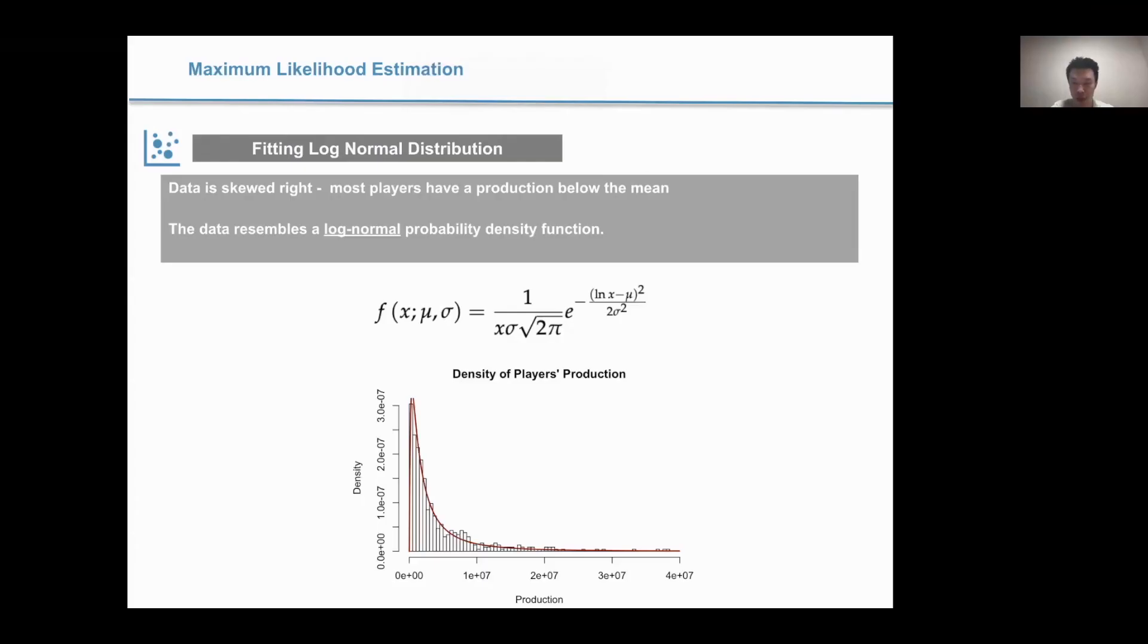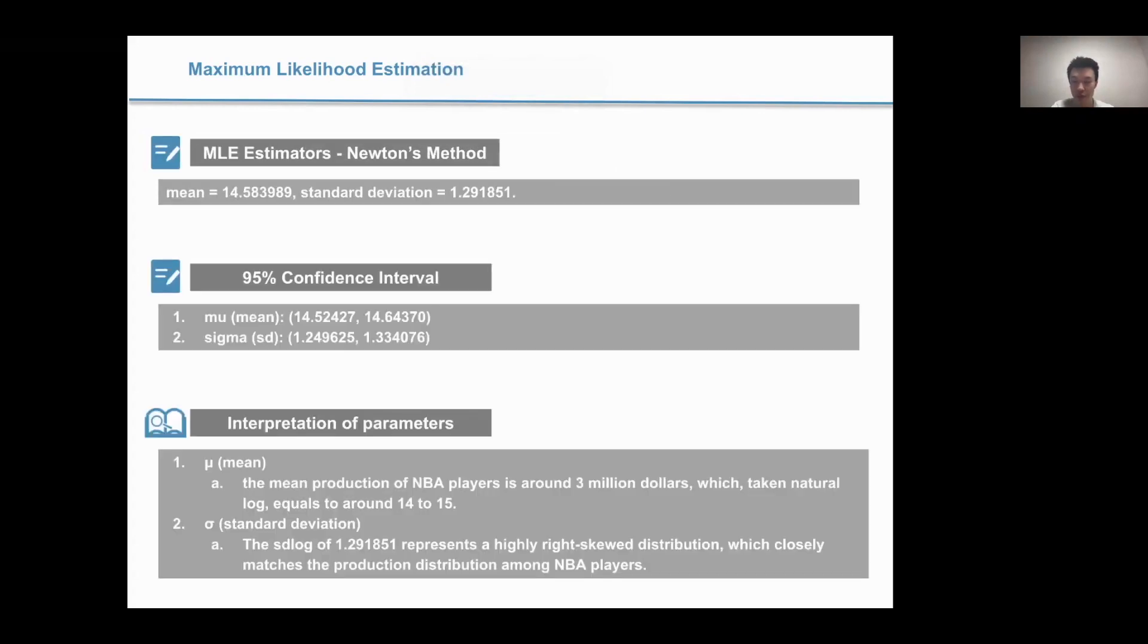From the fact that the dependent variable in our study, the player's production, is skewed to the right, we decided to use a log-normal distribution. Using Newton's iteration, we found that the first parameter has a median of 14.58 and a 95% confidence interval from 14.52 to 14.64, and the second parameter has a median of 1.29 and a 95% confidence interval from 1.25 to 1.33. The first parameter stands for the natural log of the median of the distribution production. With that standing around 3 billion US dollars, the first parameter should be around 40 and 15. This is where we start our initial value for the iteration. The second parameter reflects a highly skewed pattern.